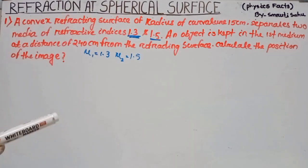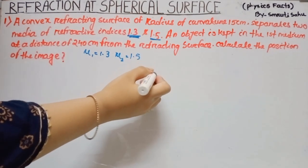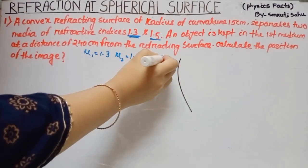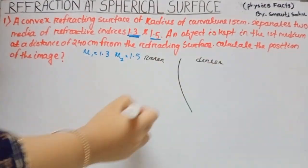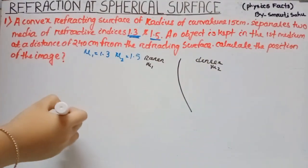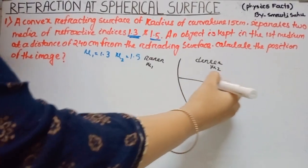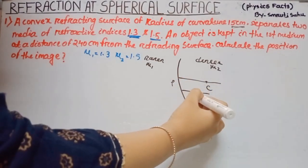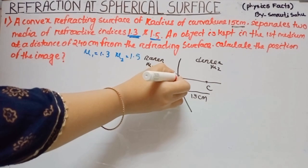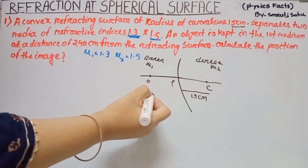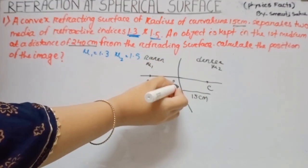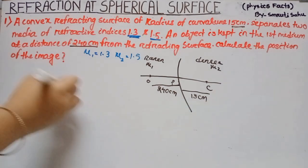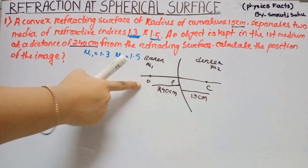First, draw the diagram. Here we have a convex refractive surface towards the rarer medium. This side is the rarer side with refractive index mu1 and the other side is the denser medium with refractive index mu2. The center of curvature is marked and the radius of curvature is 15 cm. The object lies in the first medium, placed 240 cm from the refractive surface. Calculate the position of the image. The object is in the rarer medium.